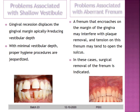The second problem is associated with a shallow vestibule. Gingival recession tends to displace the gingival margin in an apical direction, resulting in a shallow vestibule. With minimal vestibular depth, proper hygiene procedures are jeopardized — you will not be able to place your brush properly. This constitutes a mucogingival problem.